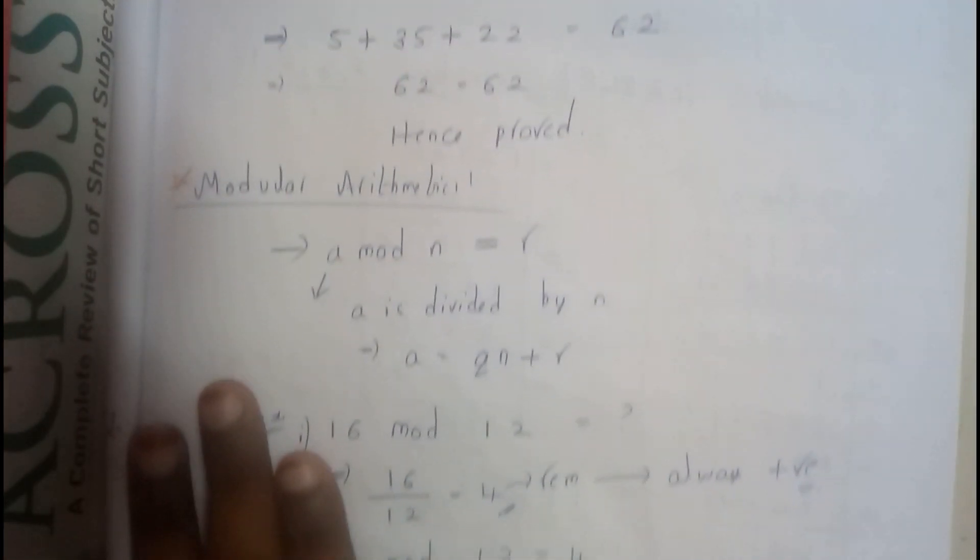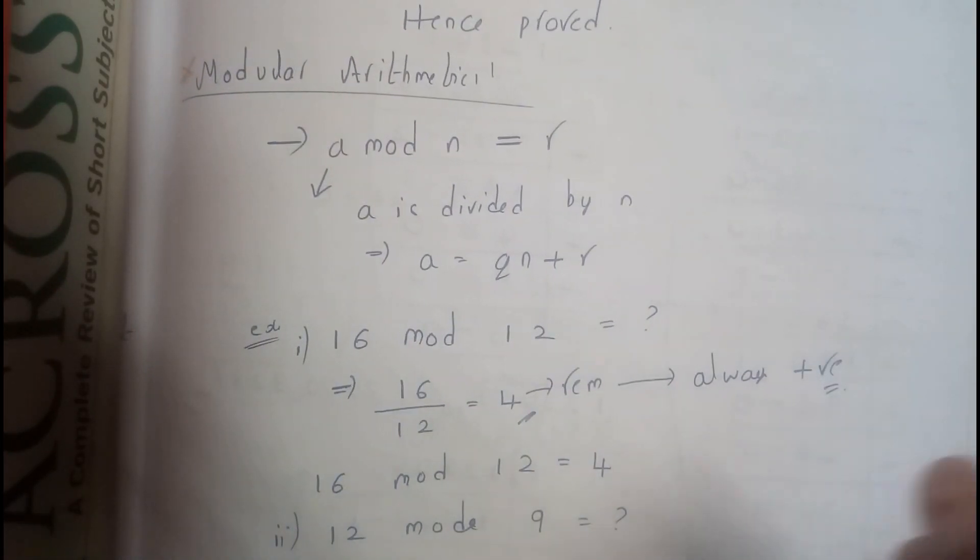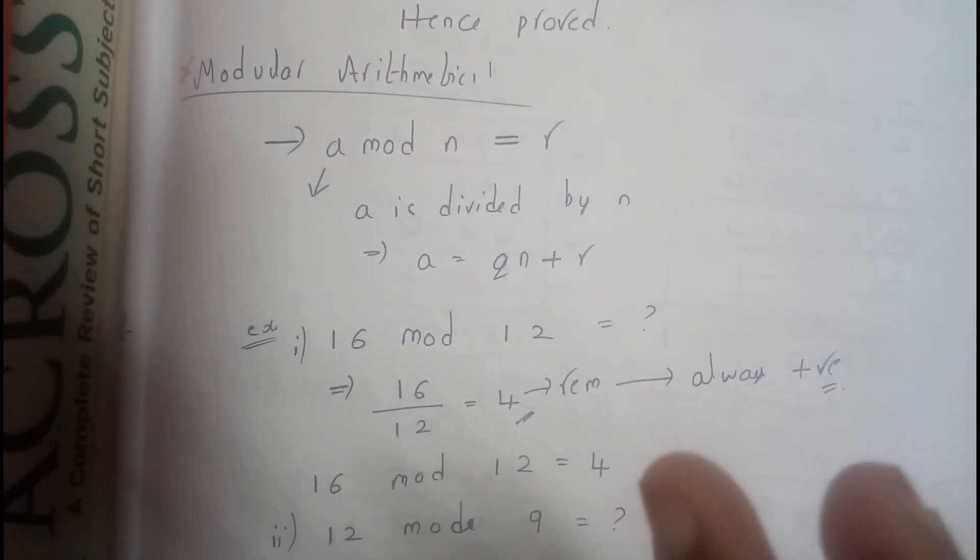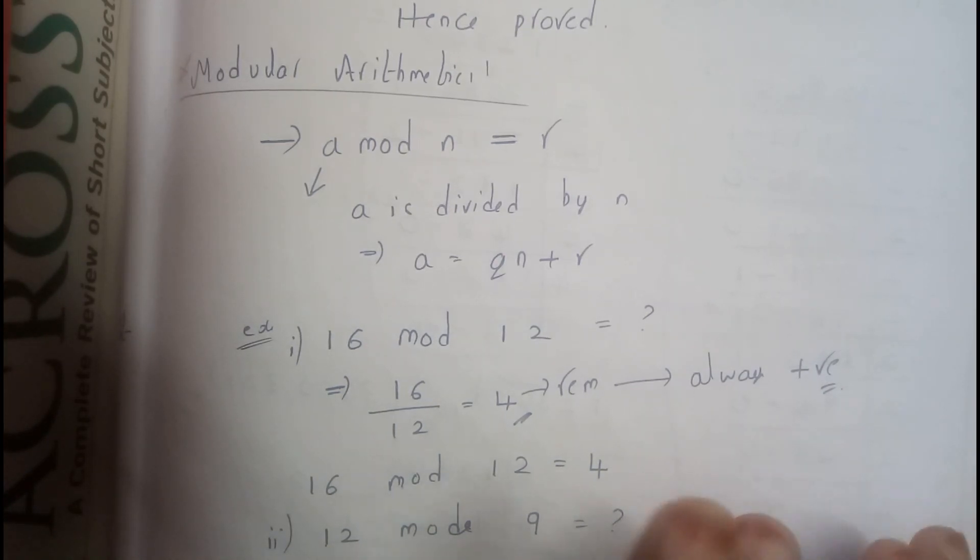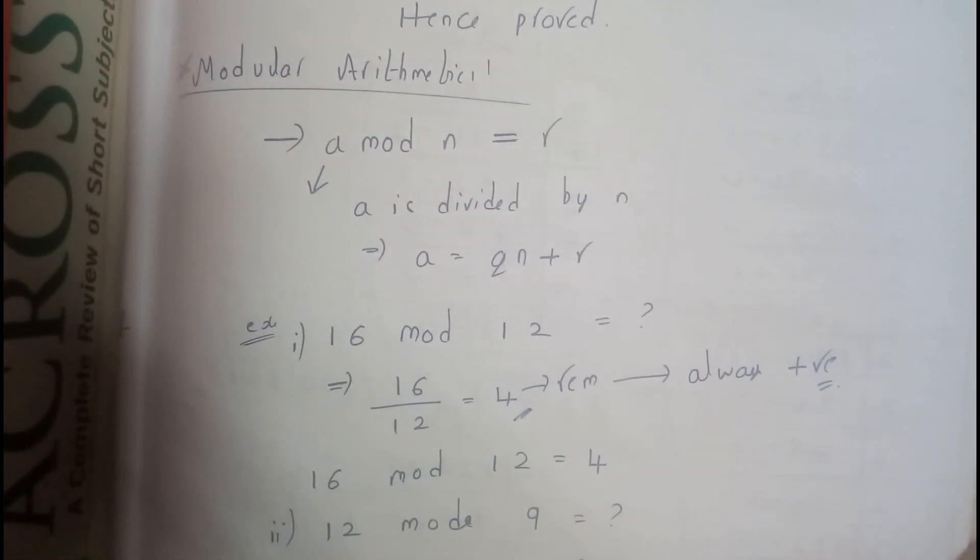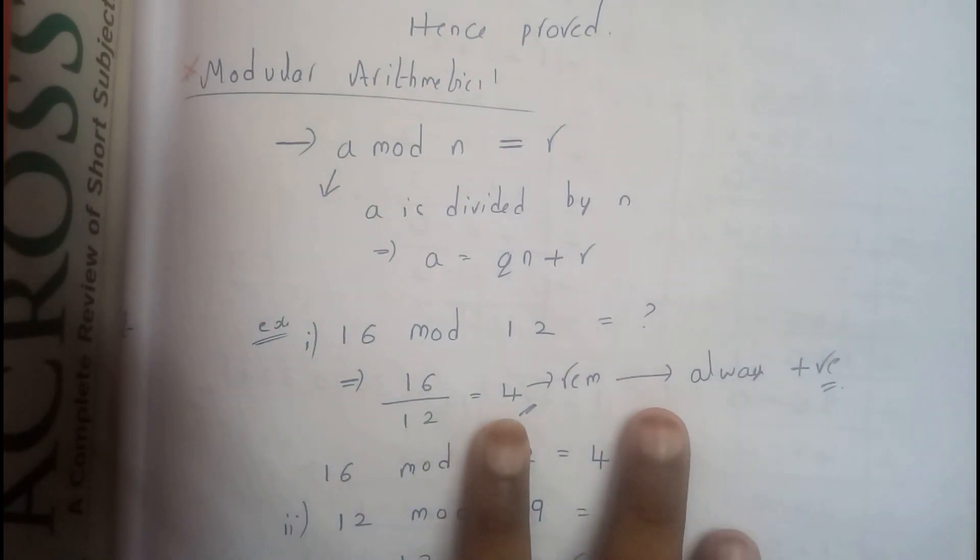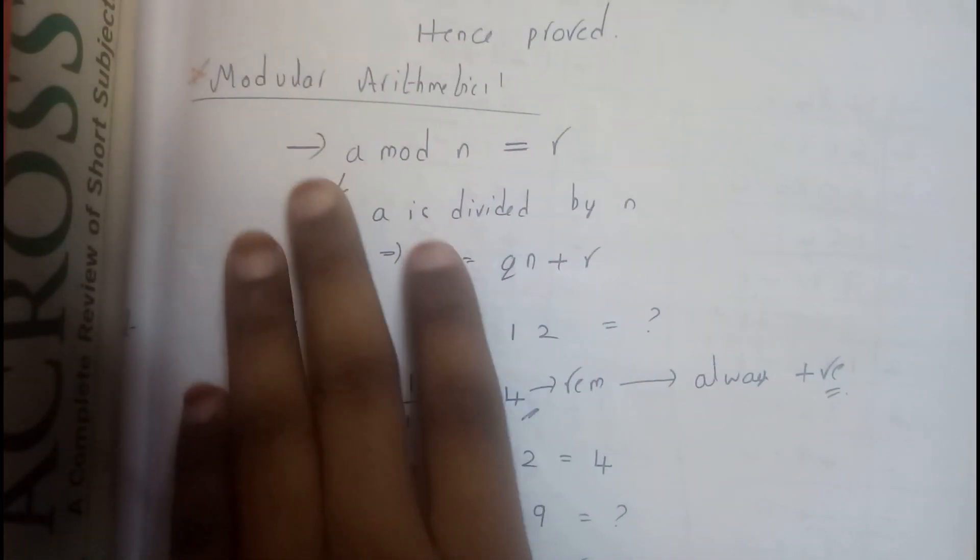So now let us go through modular arithmetic. Modular arithmetic is nothing, I think most of you have at least learned C, that's one of the most important subjects for any branch student. So in C, if you use mod you're going to get the remainder. If you use slash you get the quotient, if you use percentage you get the remainder. So that's this modular. A mod n equals the remainder, which is nothing but a is the dividend divided by n.